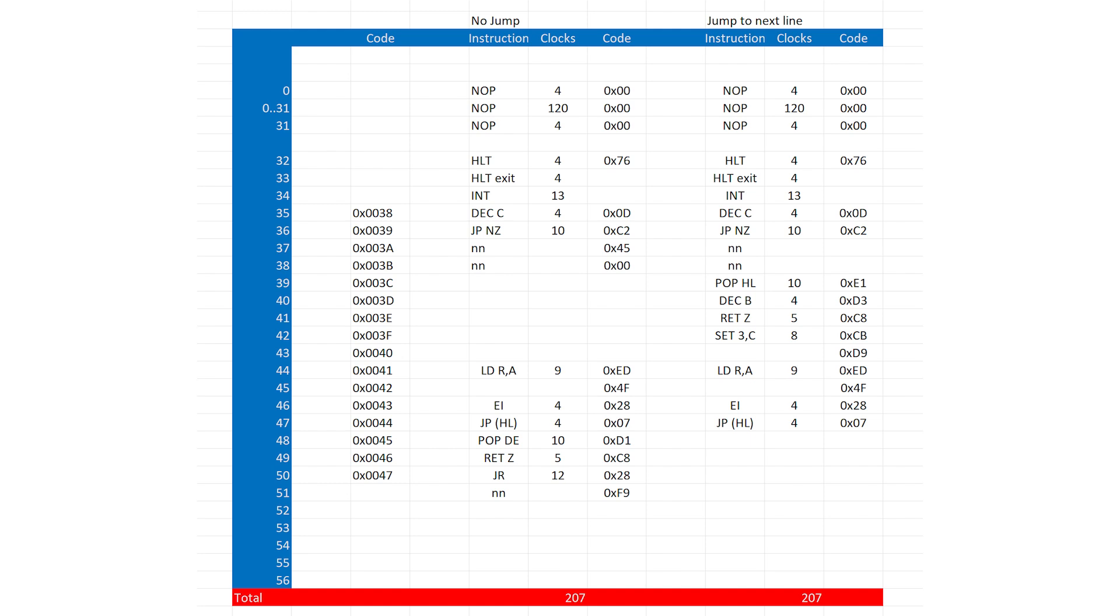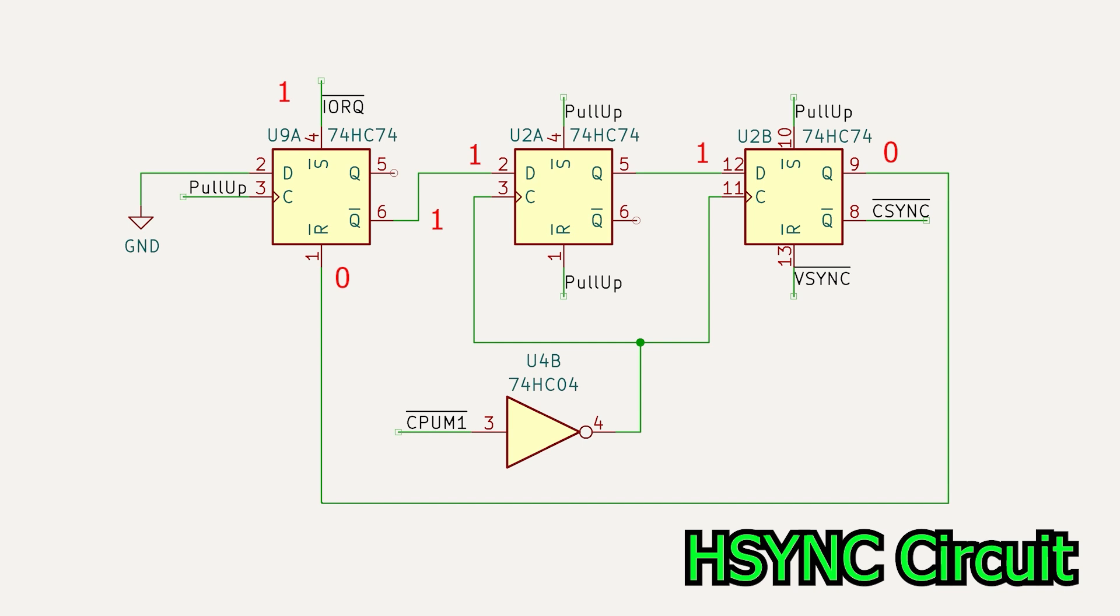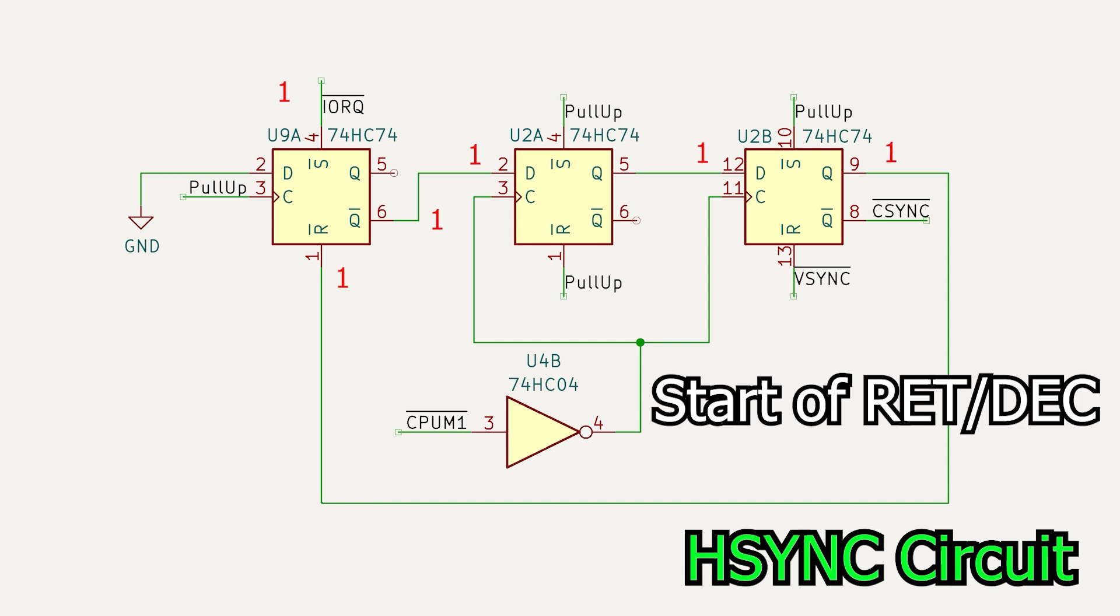Now this could either be the POP DE or the POP HL instruction depending on which pathway we take, but either way, both take 10 clock cycles. At the start of fetch for the next instruction, which is either the return or decrement instruction, the output on the rightmost flip-flop goes high, and that is the end of horizontal sync.